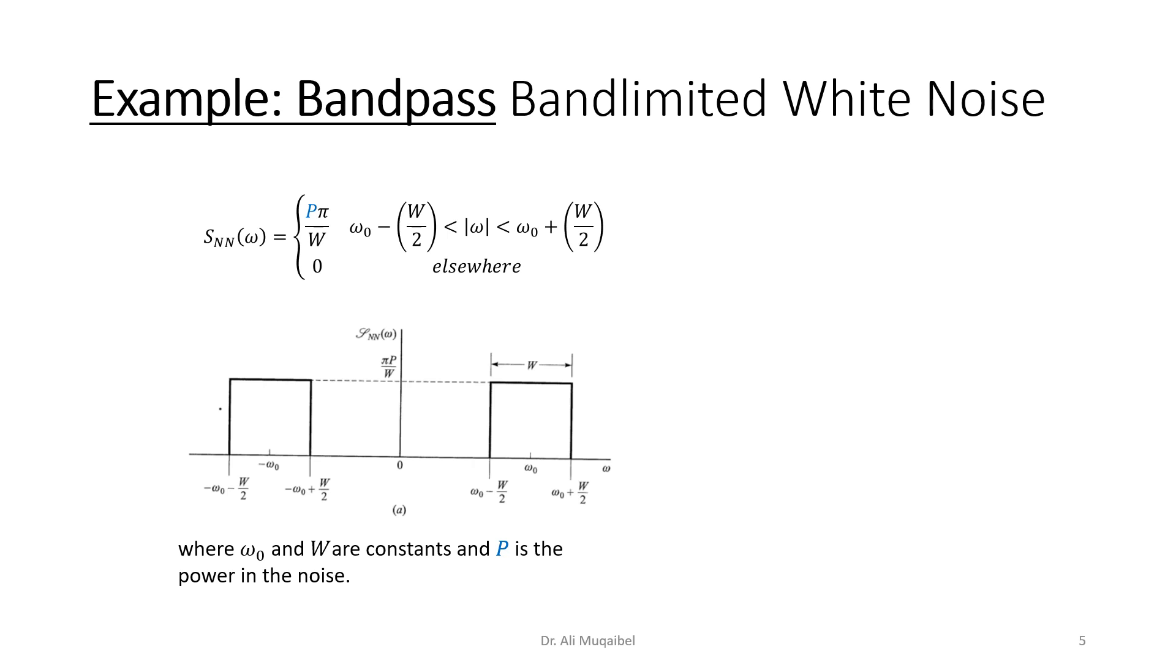The next example is band-limited bandpass white signal. We had lowpass, now it's bandpass. You can see we have two bands because we're working at high frequency. Once more, if you want the power to be P, we have from here to here a bandwidth W. There's a negative image of that, so the center frequency is ω₀. It goes W/2 and minus W/2 on both sides. The width of the two rectangles is 2W. The height again has to be Pπ/W as we explained. This is how we express the band-limited bandpass noise. It should be zero outside—zero here, zero here, zero here. This is why we use absolute value of ω, and it should be zero outside.